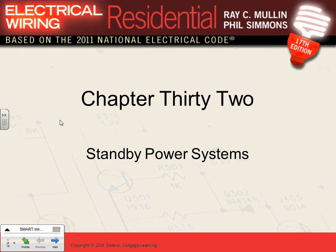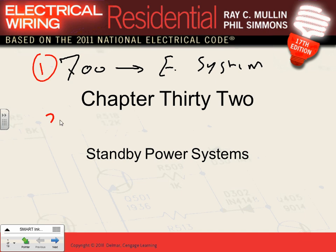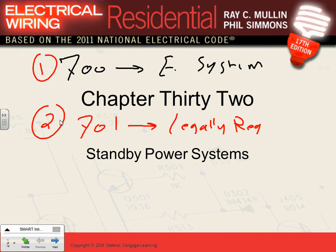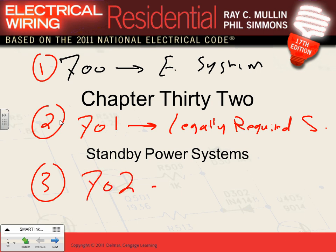Standby power systems in the NEC are divided into three articles. Article 700 is the emergency system. Article 701 is the legally required standby system. Article 702 is the optional standby system. Most buildings are required by code to have a service entrance conductor feeding the building, and some buildings are also required by code to have another source of energy.